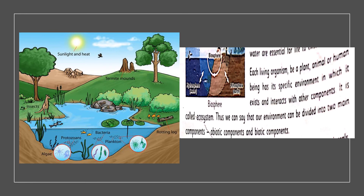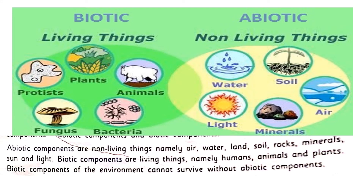They have their particular environment in which they live and they interact with each other. Each organism has a specific environment to live and there they interact with different components. This is called an ecosystem. Thus, we can say that an environment can be divided into two main components: an abiotic component and a biotic component.